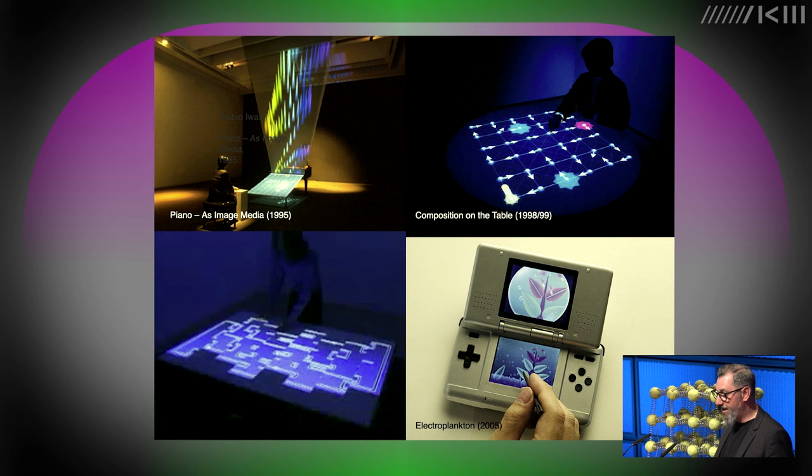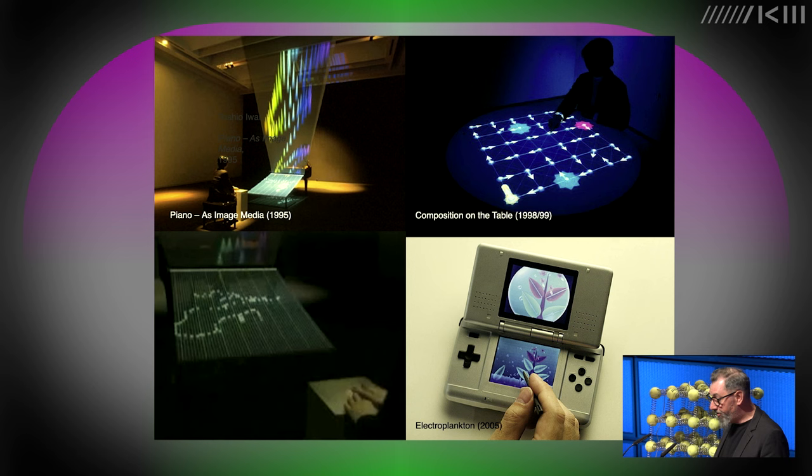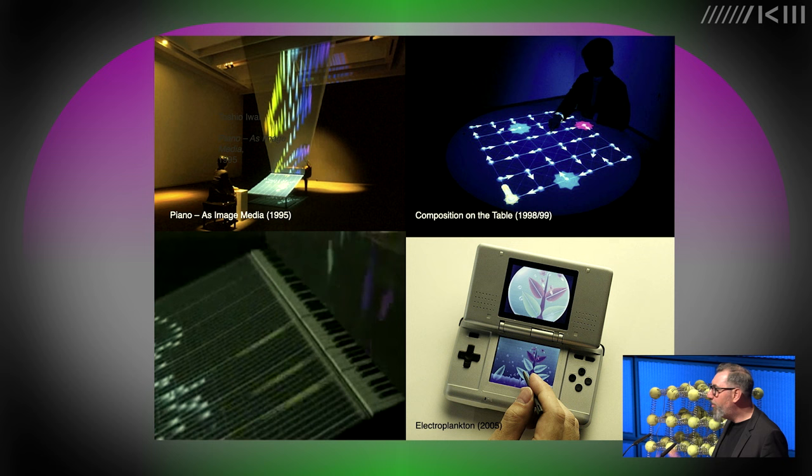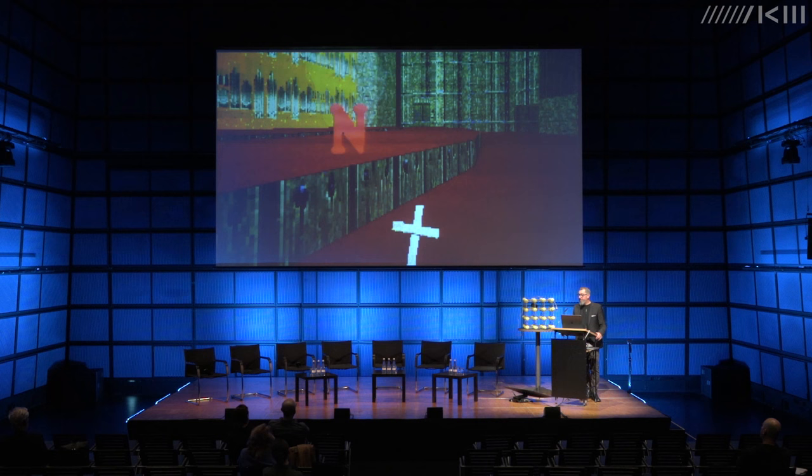Let us now explore together how the environment of a computer game can itself become a kind of exhibition — chapter two. Computer games have the property of opening up spaces. They show us spatial configurations and are themselves experienced as spaces. This is the starting point for thinking about how games themselves can become exhibition spaces. My example for a video game in art history and a kind of game-exhibition hybrid is the artistic video game modification Ars Doom from 1995.